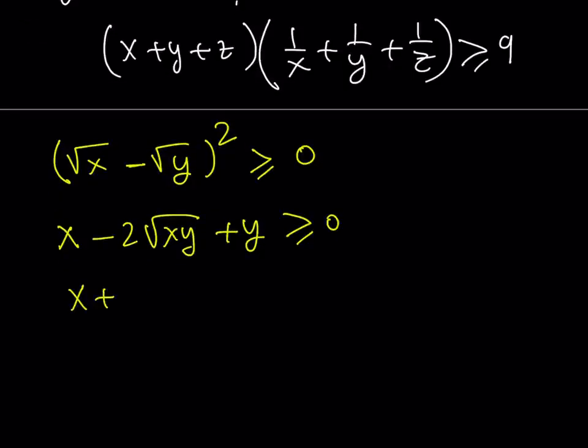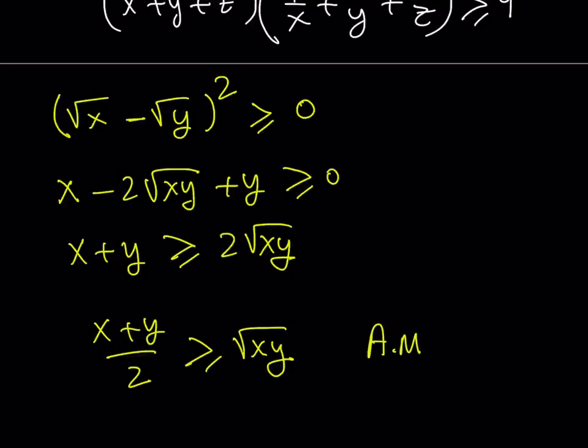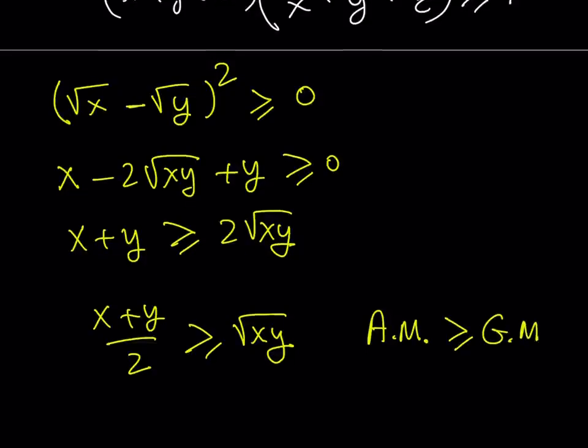And if you isolate x plus y, this is what you get. Now if you manipulate this a little bit, like divide both sides by 2, you get what's known as AM-GM inequality. So we do know that if we have a bunch of non-negative real numbers, their arithmetic mean is always going to be greater than or equal to their geometric mean.